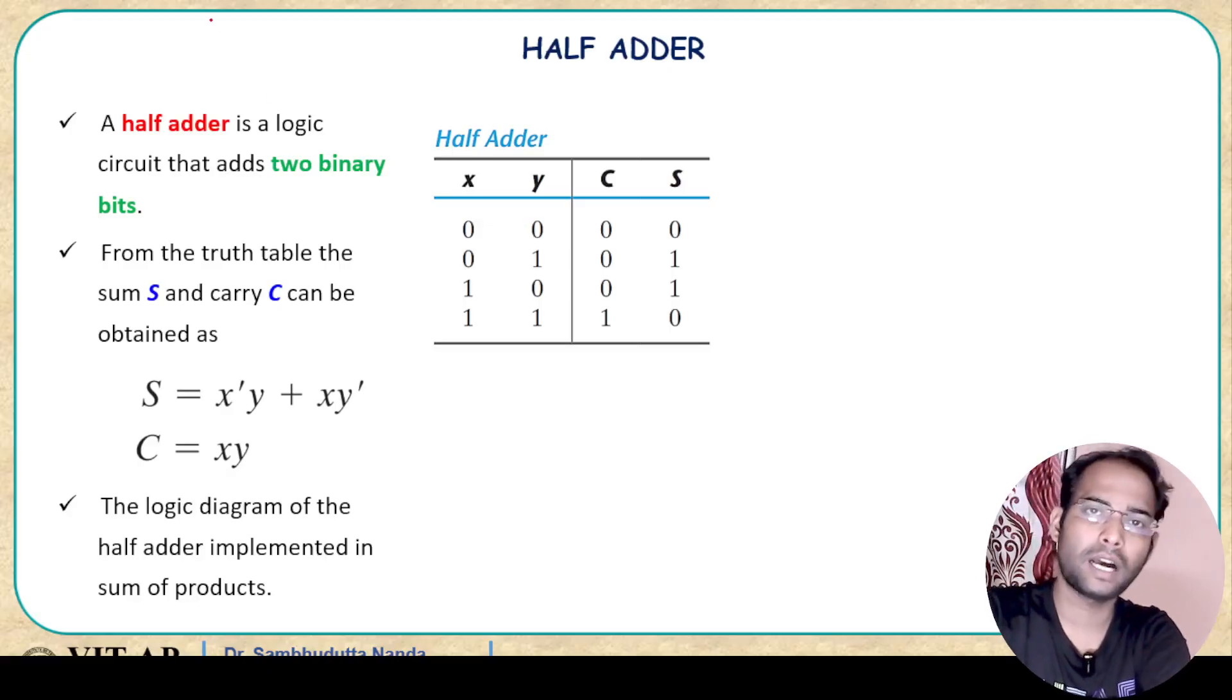So first we will see what is a half adder here. A half adder is basically a system or a combinational circuit where there will be two inputs. Consider X and Y as my two inputs here and there will be two outputs. One is the carry. If a carry is generated, it will be taken as carry. If no carry is generated, then it will be written as zero. Carry generated, it is one. And another output will be sum. What is the sum of two numbers?